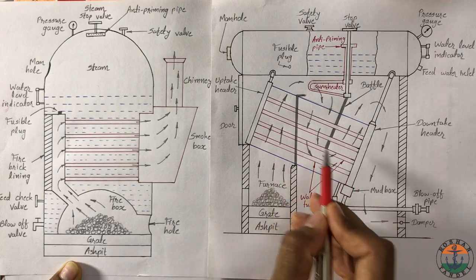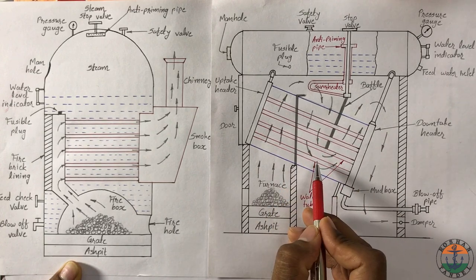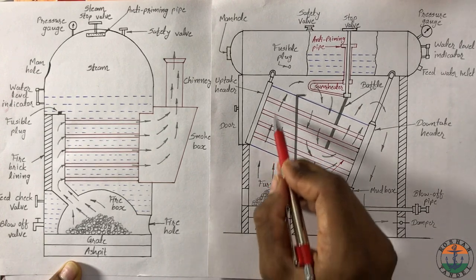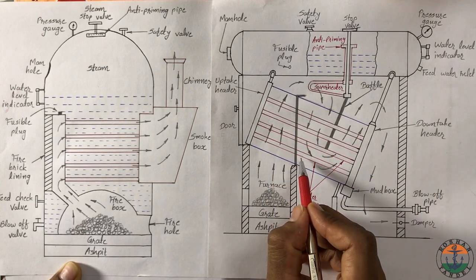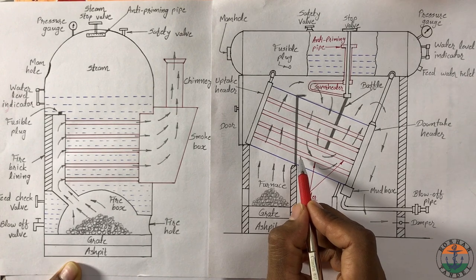Here water flowing through these tubes and these water tubes are surrounded by flue gases. So this boiler falls into the category of water tube boiler.